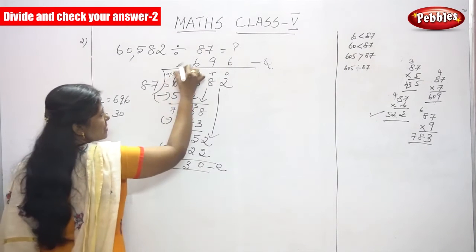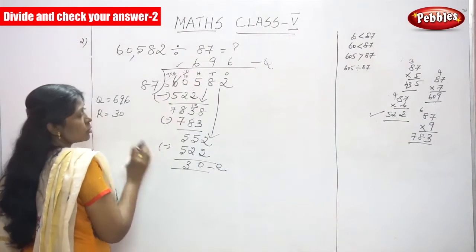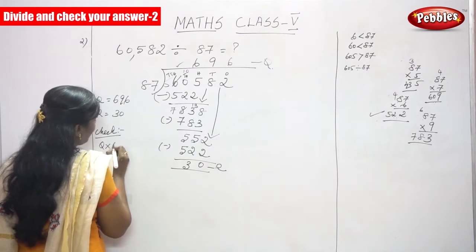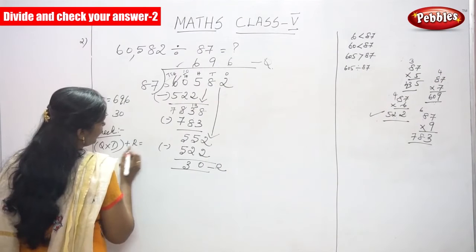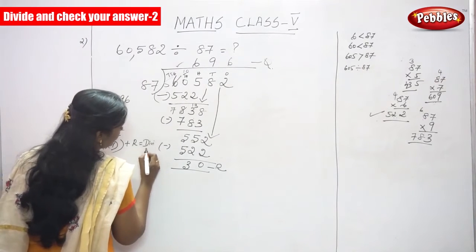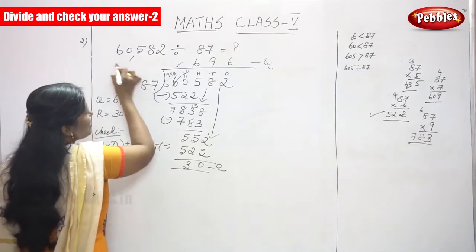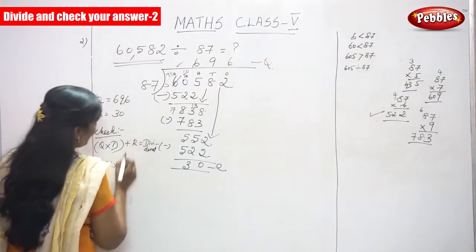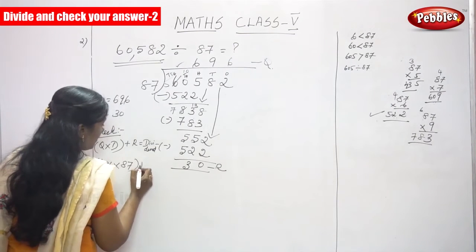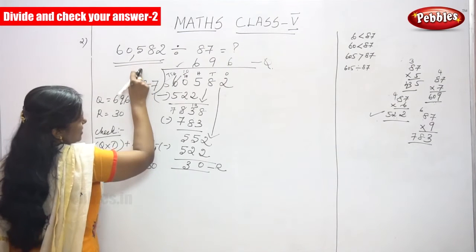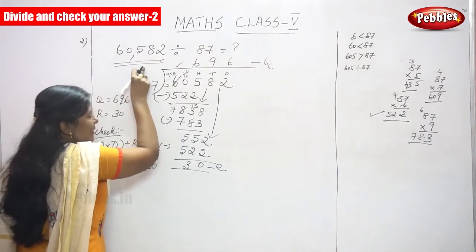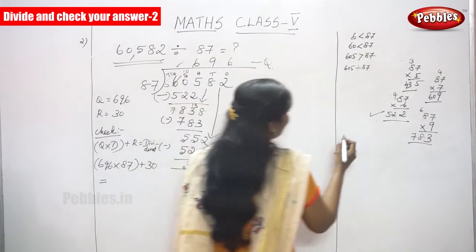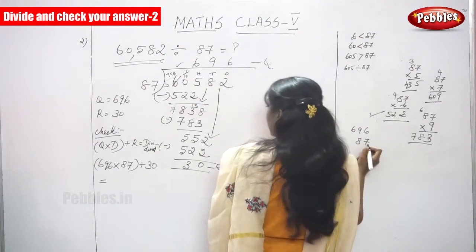Whether the answer is right or wrong, you have to find out using the check method. The formula is: quotient multiplied by divisor, in brackets, plus remainder — you get the dividend. The dividend is nothing but the original question. So 696 multiplied by 87, plus 30, should give us 60,582.